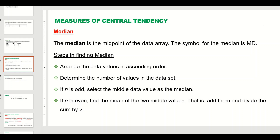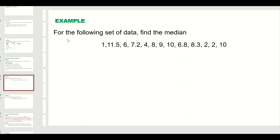Let's take an example and find the median. For the following set of data, find the median. You can see there are thirteen observations given, but they are not arranged in ascending or descending order. So we need to arrange this data from smallest to biggest — in ascending order.